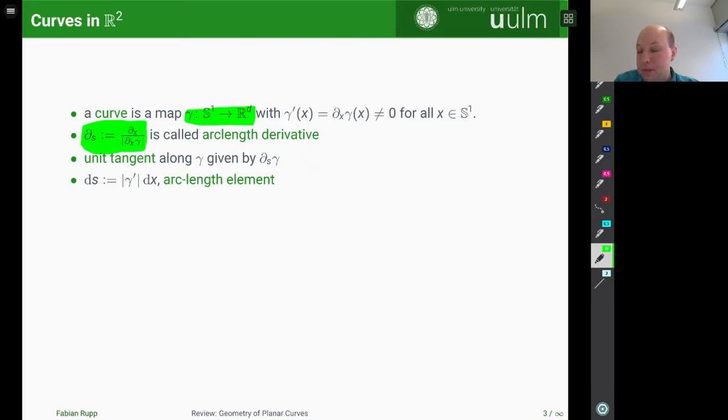And with this notation, the unit tangent along the curve gamma is just given by d_s gamma. And we also have the arc length element, which is given by this formula here.